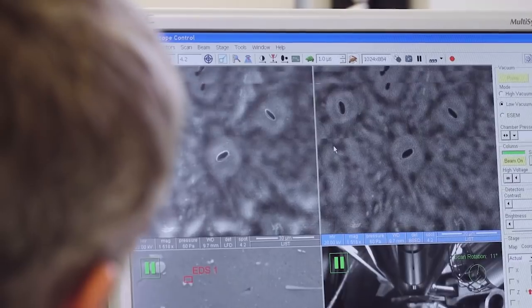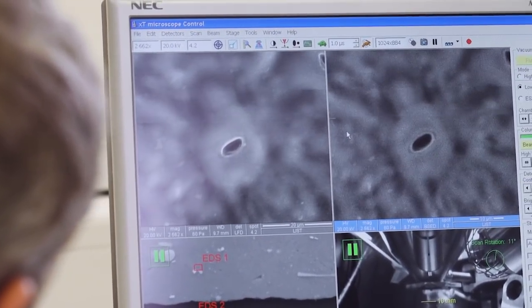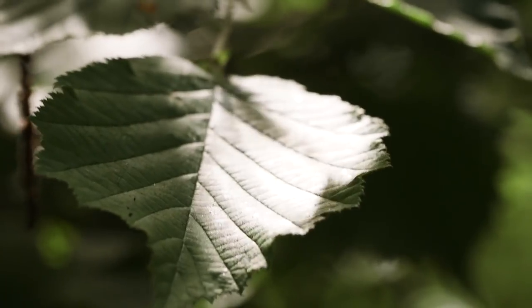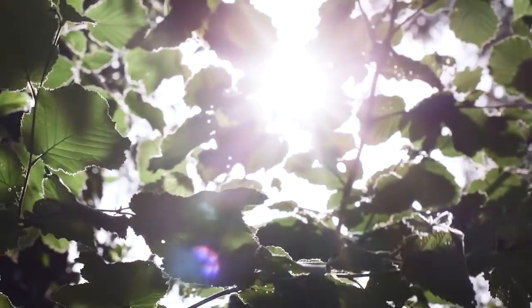So these are the small pores, we see them, they are called stomata which in Latin means mouth. So these are actually little pores that the plants use in order to regulate their gas exchange, which means they take up CO2 for photosynthesis, but they also lose water at the same time.